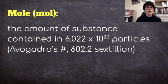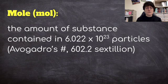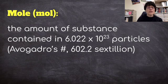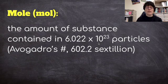So the mole is a really important quantity. This is really central to a lot of concepts in chemistry. A mole is the amount of substance contained in 6.022 times 10 to the 23rd particles. This is called Avogadro's number, and it would be 602.2 sextillion. So if I say Avogadro's number, it's 6.022 times 10 to the 23rd.